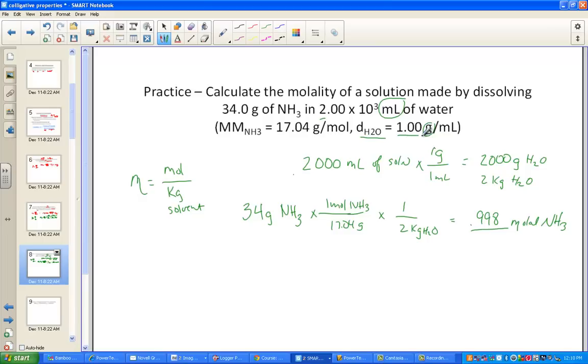This problem showed us how to use density to convert from a volume unit to a mass unit. With this example, it was nice because the density was 1, so the same number of milliliters ended up to be the same number of grams. But that's not always the case.